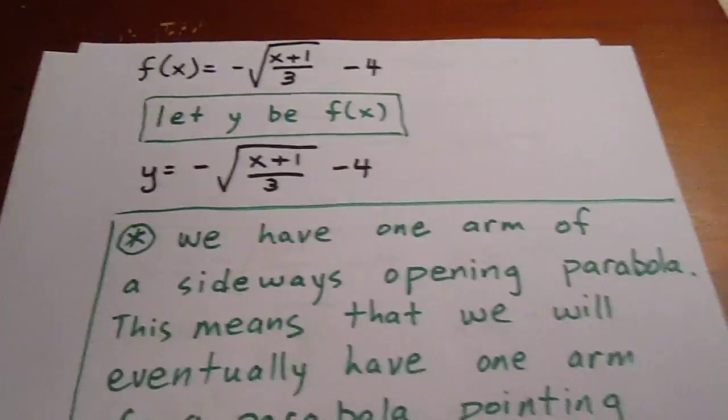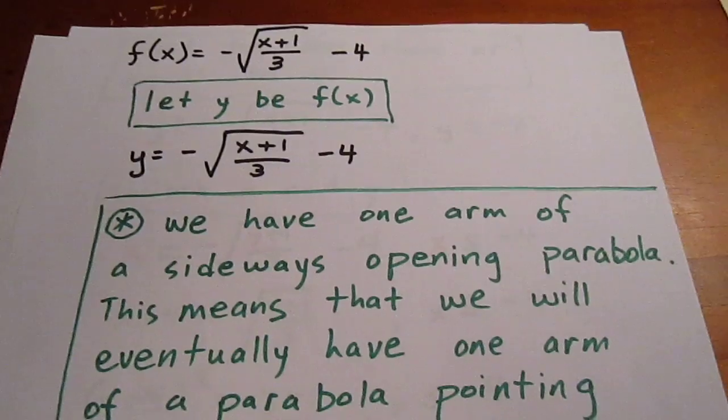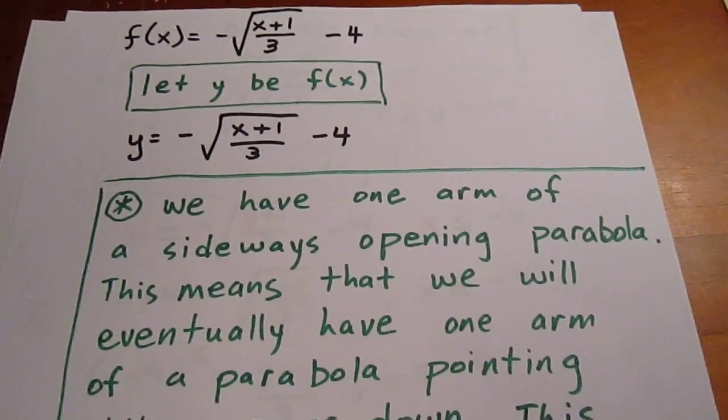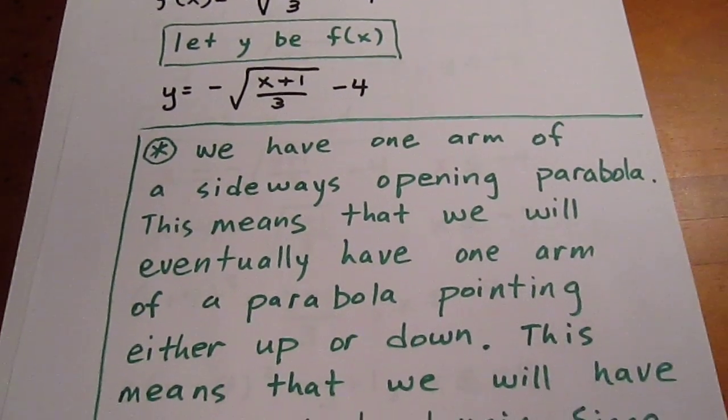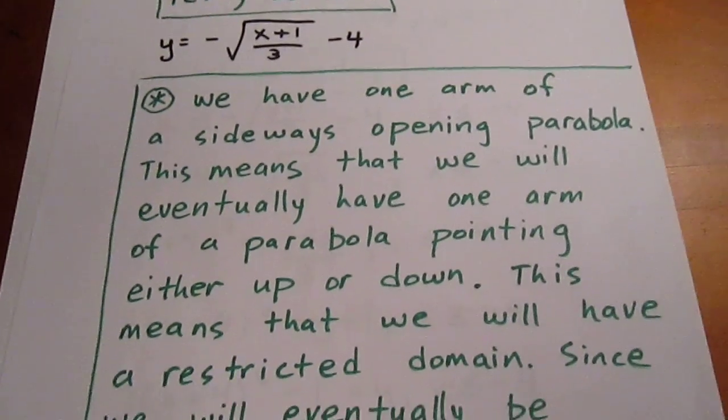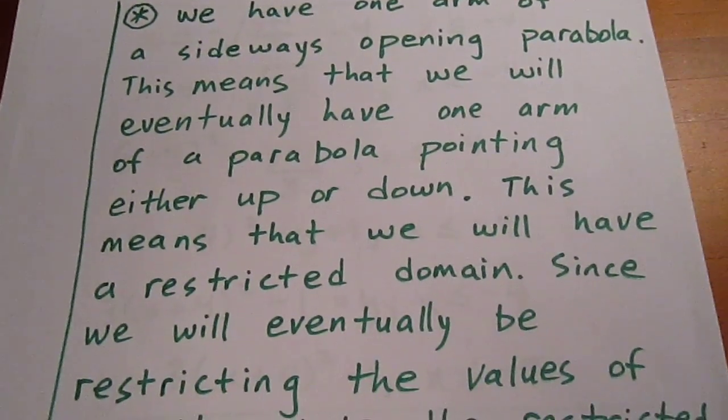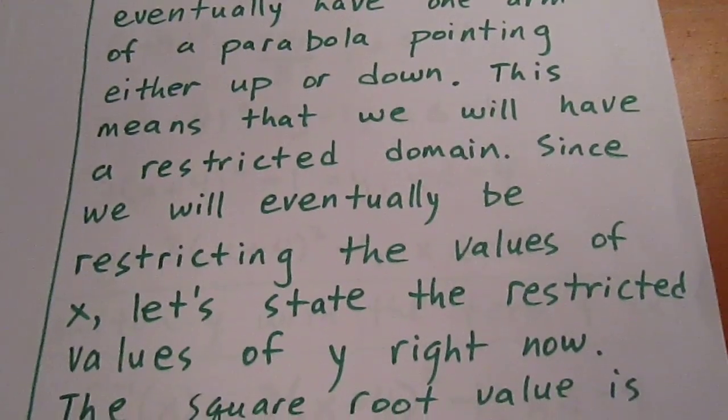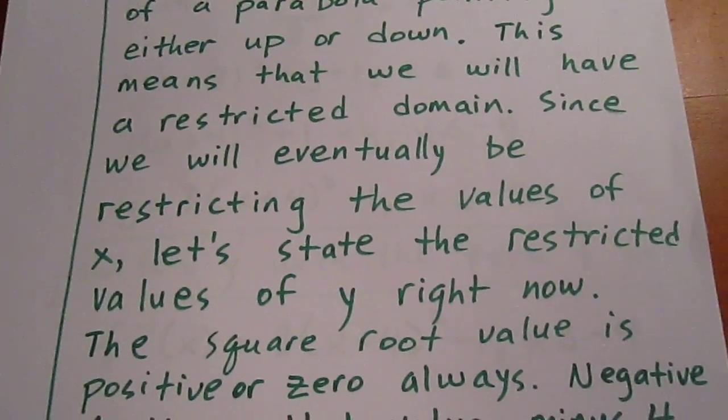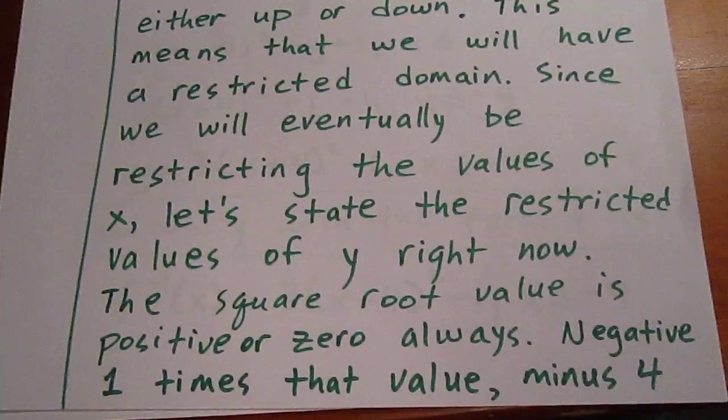What we have here is one arm of a sideways opening parabola. This means we're eventually going to have one arm of a parabola opening up or down, which means we will have a restricted domain. Since we're eventually going to be restricting the values of x, let's state the restricted values of y right now.